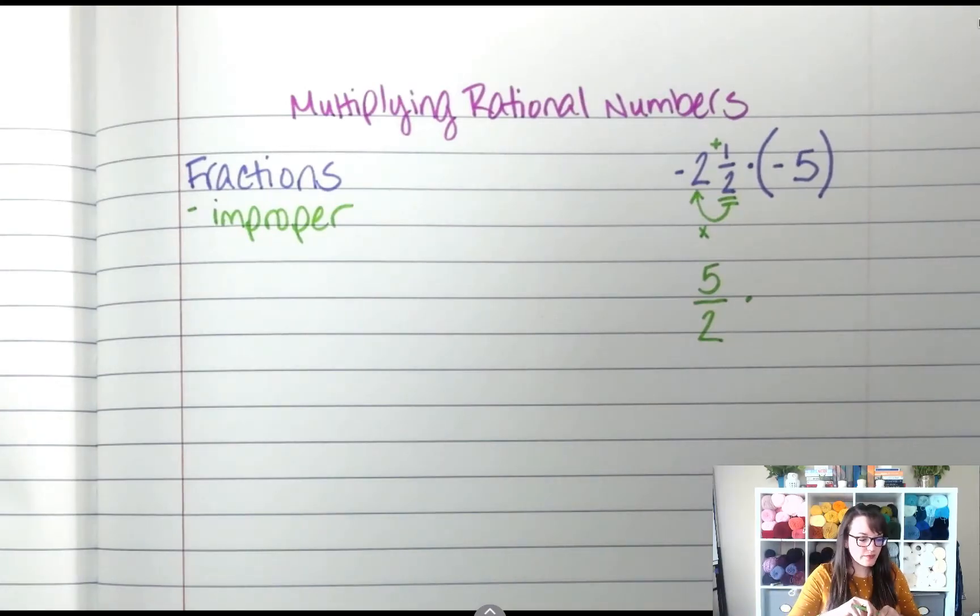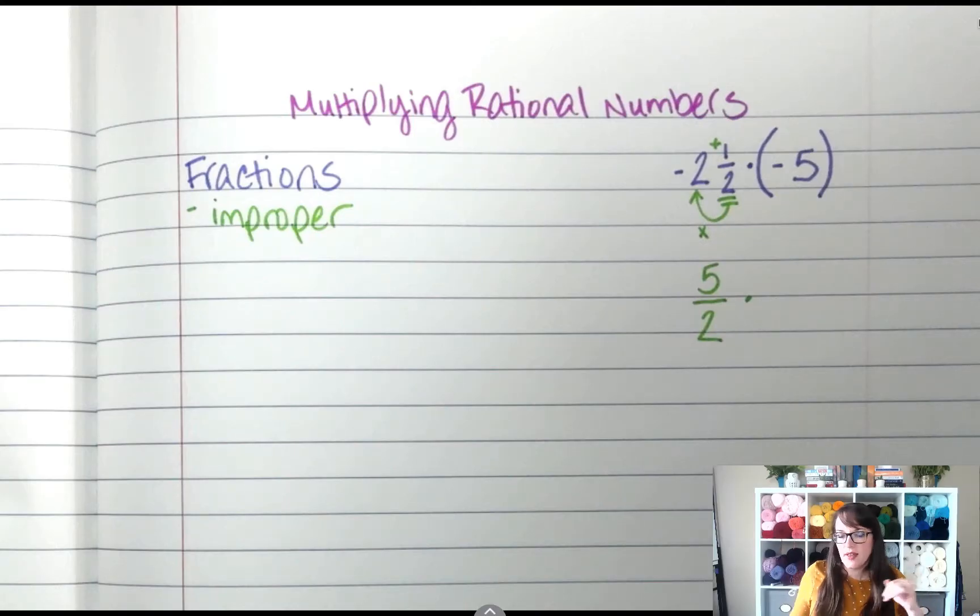Whole numbers. When we divide a whole number by something, what is a number that we can divide by that does not change the value? So negative 5 divided by what equals negative 5? 1.